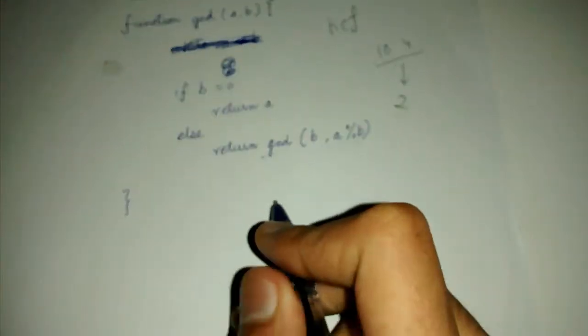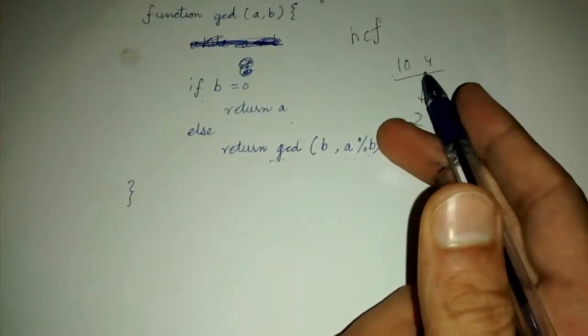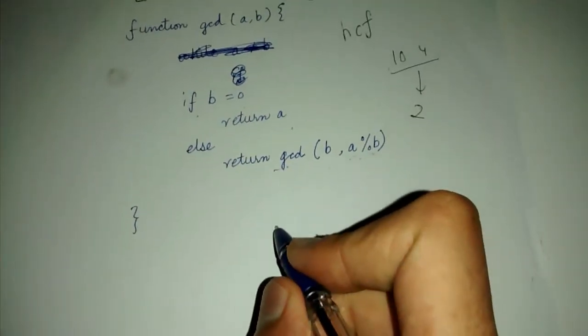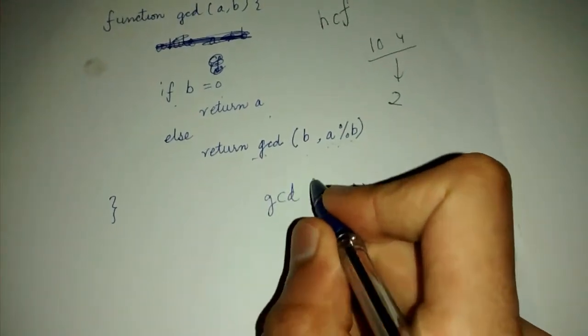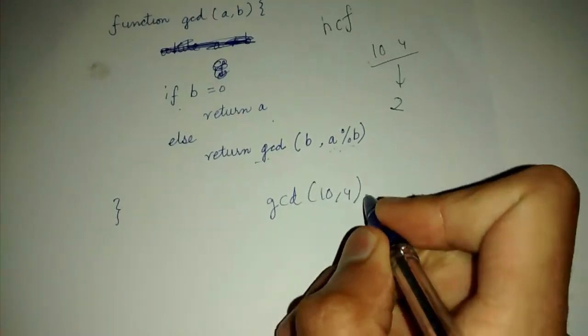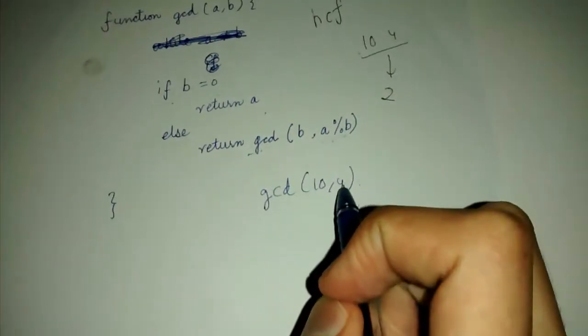Okay, so let's see a live example of this. So we will take two integers 10 and 4 in this example. So if we call GCD 10 comma 4, it will first check if the second integer is 0 which is not in this case.